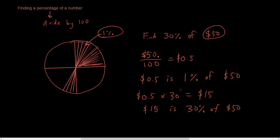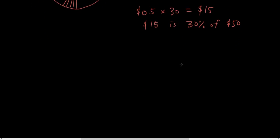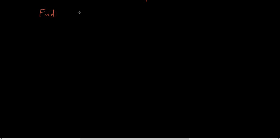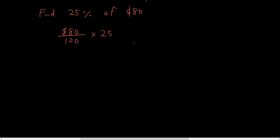So what is the shortcut? Let's do another one. Let's say we want to find twenty-five percent of eighty dollars. The first thing is we get eighty divided by a hundred — that gives us one percent — times by twenty-five, which gives us twenty-five percent. Eighty divided by a hundred is zero point eight, times twenty-five, and that will give us twenty dollars.